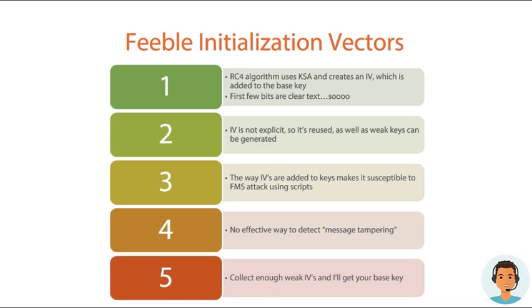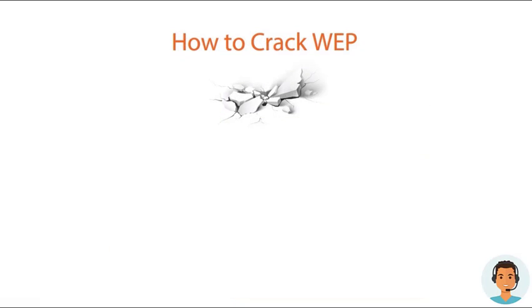There might be some methods such as checksum values that can look at message integrity, but they have their own drawbacks. Probably one of the most critical weaknesses is the use of short initialization vectors. Basically within a few hours of traffic — and nowadays I can simulate the traffic to speed up the timeframe — the same IV will repeat itself. I can see those repeats using sniffing tools, capture the encrypted packets with the same key, and then use a tool like Aircrack or WEPCrack to decrypt the weak IV, which gives me the base key.